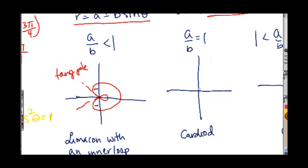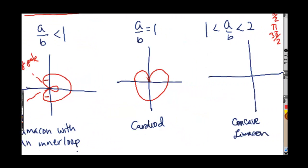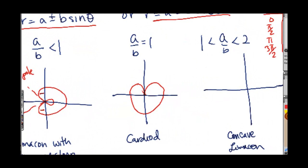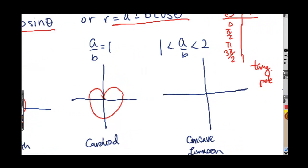If it's a over b equals one, it's a cardioid. Not the best looking cardioid ever, but you get the idea. I guess I can make it a little better here. And again, you're going to be doing the same table thing, tangents at the pole.